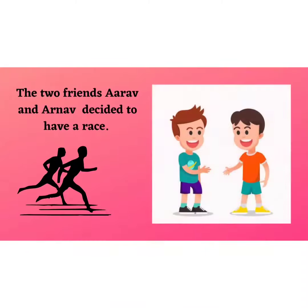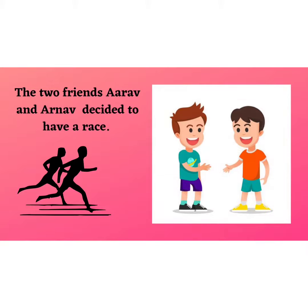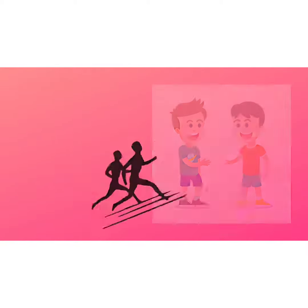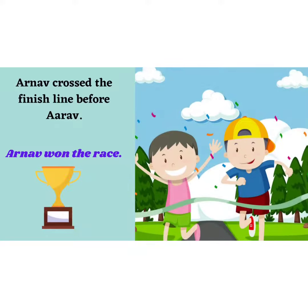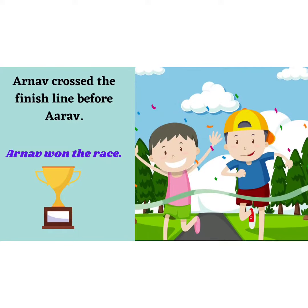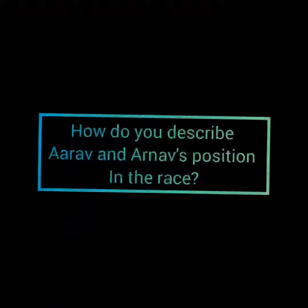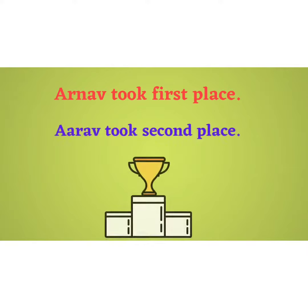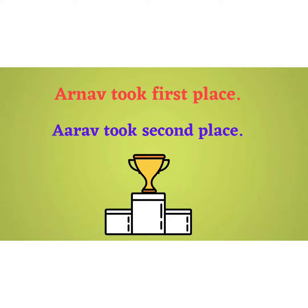The two friends Aaruf and Arnav decided to have a race. Arnav crossed the finish line before Aaruf and Arnav won the race. Now how do you describe Aaruf and Arnav's position in the race? Yes, you can say Arnav took first place and Aaruf took second place.